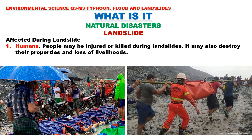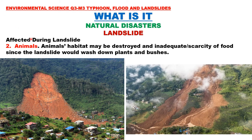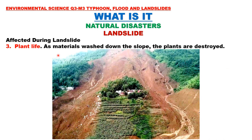Who is affected during landslides? Number one: humans — people may be injured or killed, and their properties and livelihoods may be destroyed. Number two: animals — animals' habitat may be destroyed and food becomes scarce since landslides wash down plants and bushes. Number three: plant life — as materials wash down the slope, plants are destroyed or buried, causing them to die.